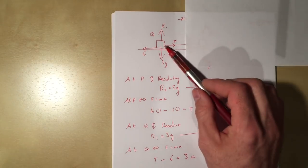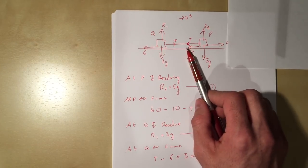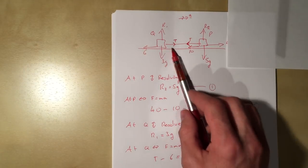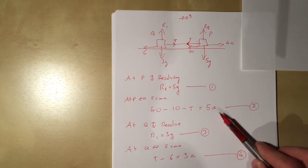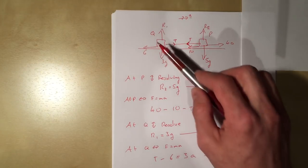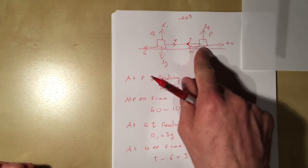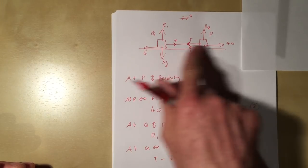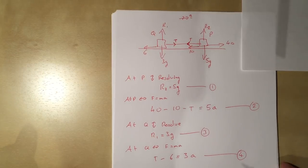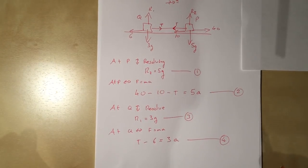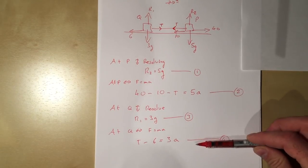The tension is the same all the way through the tow bar because it's modelled as a light inextensible string - those modelling assumptions make the tension equal throughout. The acceleration of the car and caravan must also be the same: once the string is taut, if P speeds up Q speeds up. They move at the same speed at all points, so they have the same acceleration. These two equations can therefore be solved simultaneously.